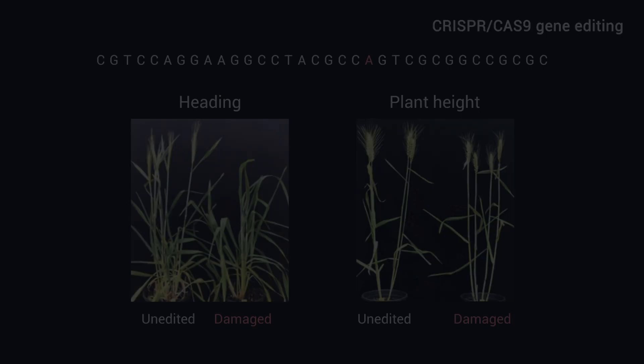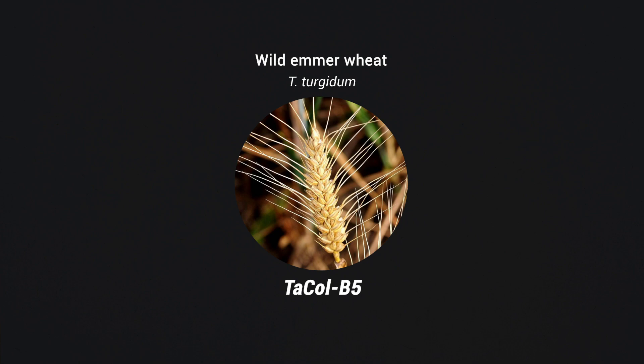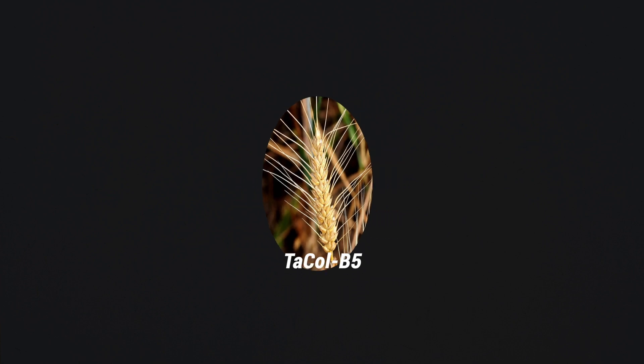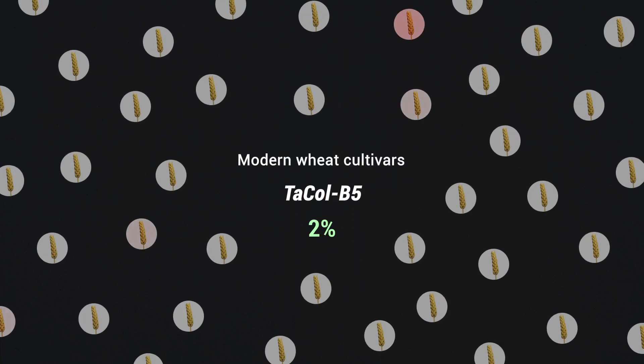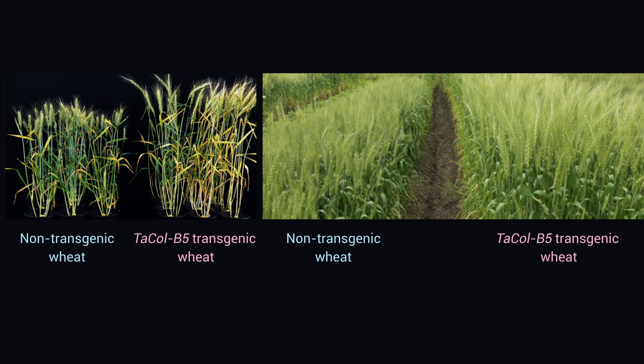We found that the CoL5 gene originated from the tetraploid wild emmer wheat, but it exists in only two percent of accessions in a global collection of modern wheat cultivars. The cloning of the wheat CoL5 gene offers a new route to maximize yield in wheat.